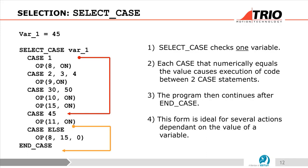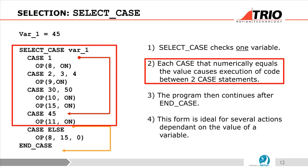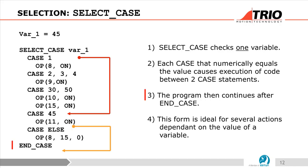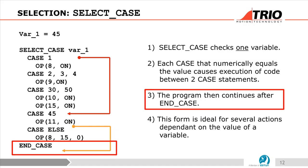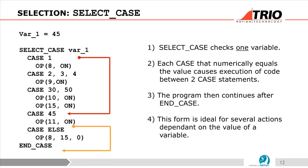Alright, CASE. CASE checks on variables. Each CASE dynamically equals the value, causing execution between two CASE statements. It will compare this and the program continues until the END CASE. You can set a variety of programs - CASE 1, CASE 2, CASE 3. This form is ideal for several actions dependent on the value of the variable. The CASE can be programmed to VRs as well. For example, VR20 CASE - you can change VR20 to 5, execute CASE 5; VR20 to 1, execute CASE 1.